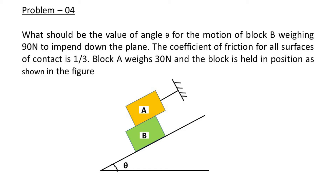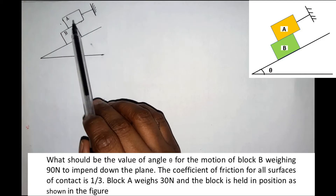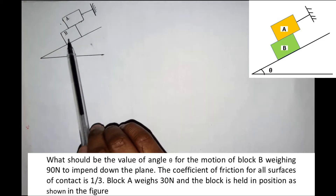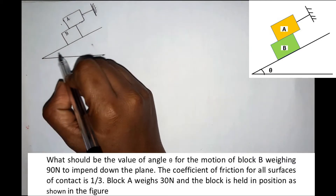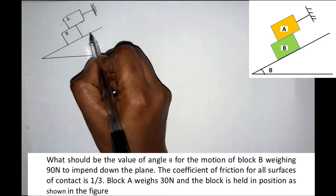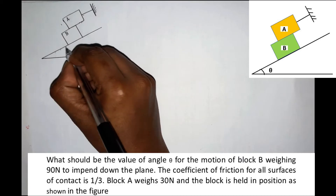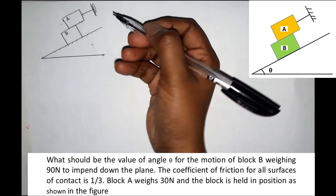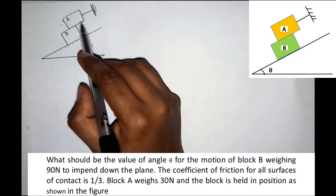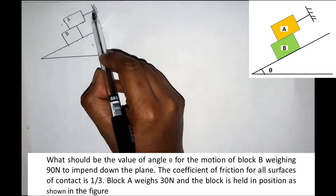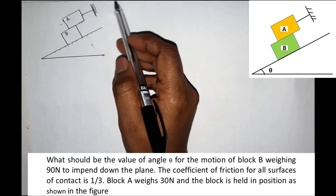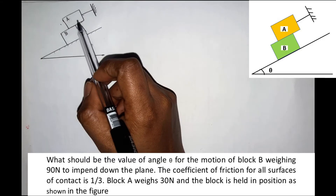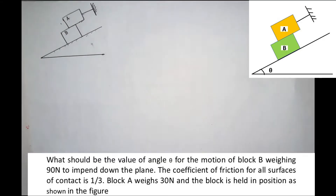Block B is held in a position as shown. In this question, we have two blocks, A and B, on an inclined surface. They are connected by a string. This is the outline of the question: what should be the value of angle theta for the motion of block B weighing 90 N?